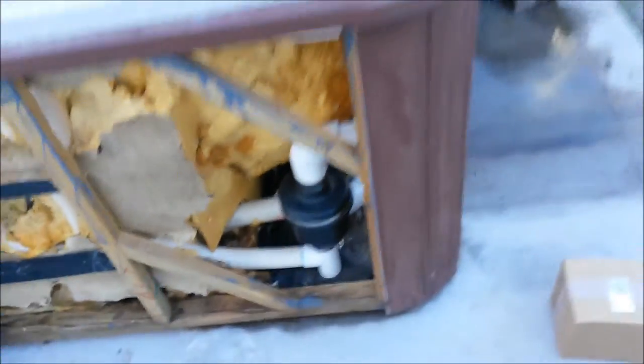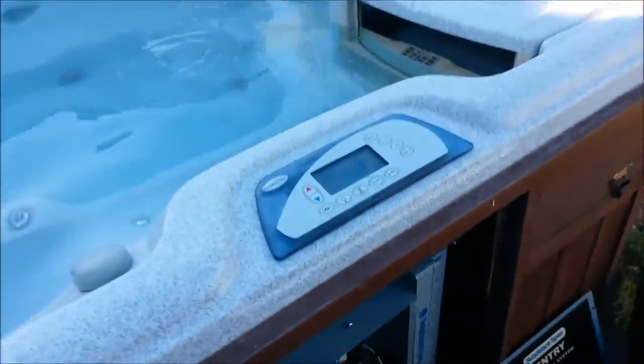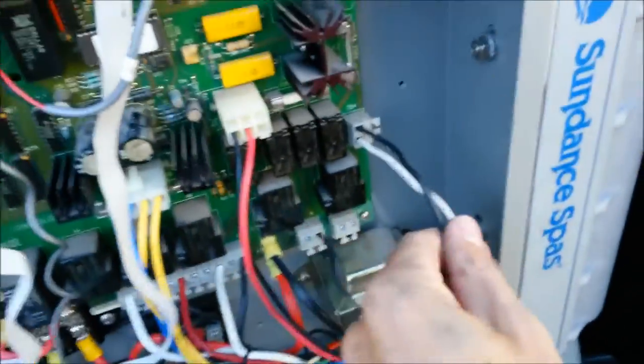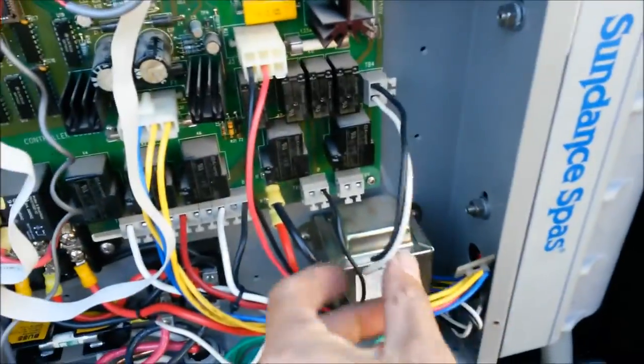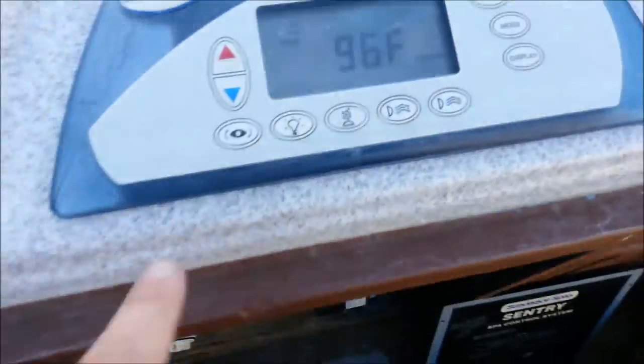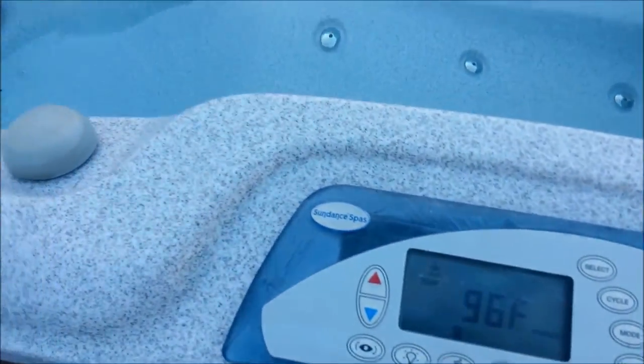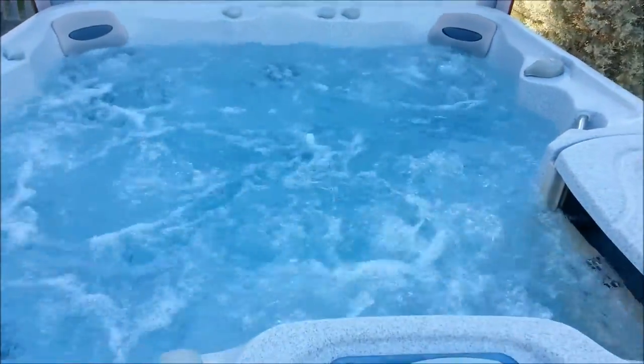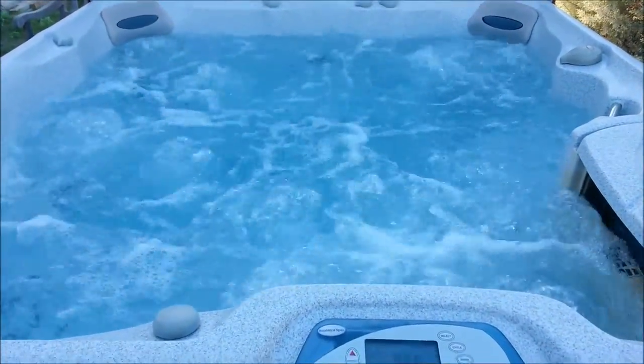Alright, power is back on to the hot tub. And I had disconnected the two wires going to the control board. So I reconnected those as well. And then I'll come up here. Press the air blower button. And we have a nice flow there.